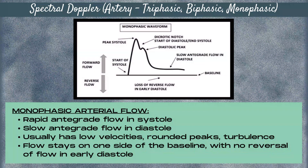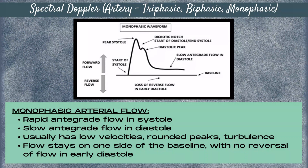Our third arterial spectral Doppler waveform is monophasic flow. With monophasic flow, there's rapid antegrade flow in systole and slow antegrade flow in diastole. Usually there's low velocity flow, rounded peaks, and turbulence with this type of waveform. Flow stays on one side of the baseline with no reversal of flow in early diastole. Monophasic flow is a low resistance pattern of blood flow.